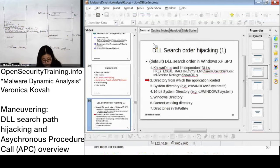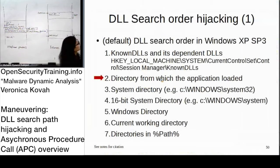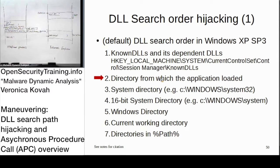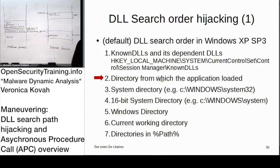After that, it loads DLLs from the directory where the application is loaded — where the exe is located. Then it uses the System32 directory, then System, which is for 16-bit system directories. After that, it uses the Windows directory, generally C:\Windows. Then it searches the DLLs in the current working directory — where the exe is being launched from. Then it uses the PATH environment variable.